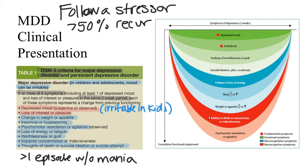The DSM-5 criteria are also depicted in a graphic in pictorial format. The fundamental symptoms — at least one of which must be present — are depressed mood or anhedonia. Over a two-week period, at least five or more of the nine symptoms must be present nearly every day. The additional symptoms are listed in order of how much cumulative functional impairment is produced, ranging from depressed mood and anhedonia at the lower end to psychomotor retardation or agitation at the higher end.